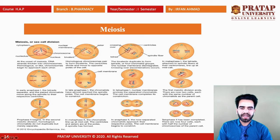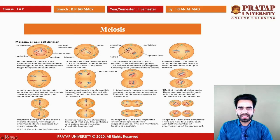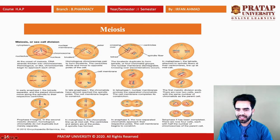When the first meiotic division ends, there are now two cells, and each cell has the same number of chromatids as the parent cell. Then prophase II begins. In the second meiotic division, homologous chromatids do not duplicate but separate. In metaphase II, the chromatids line up at mid-cell, with centrioles and asters at the poles and the spindle formed.